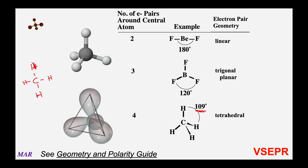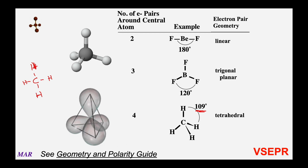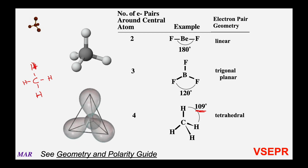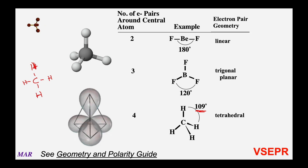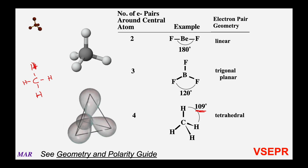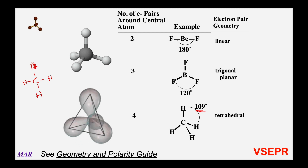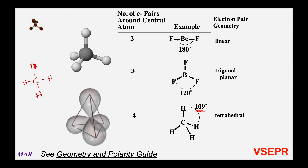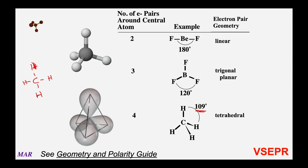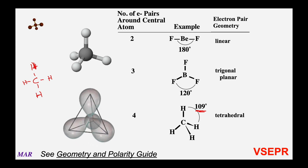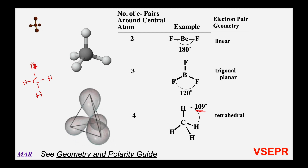So to summarize: one central atom, two outside atoms — linear. One central atom, three outside atoms — trigonal planar at 120 degrees. One central atom, four outside atoms — tetrahedral with angles about 109 degrees.